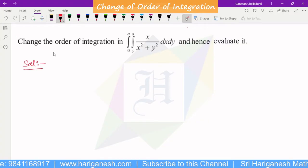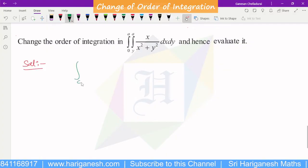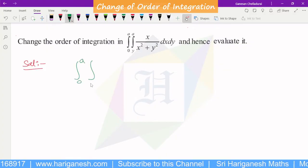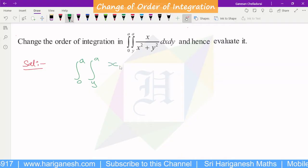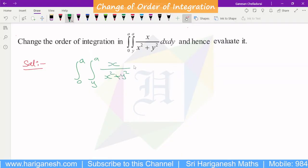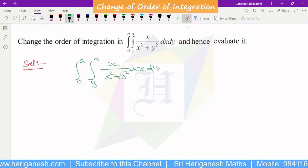So first, integral 0 to a and y to a, x by x square plus y square dx dy.